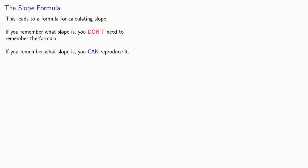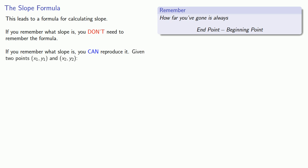The one thing to remember is that how far you've gone is always end minus beginning. Let's say I run between the points (x1, y1) and (x2, y2). If I want to find the rise, I start at a height of y1 and I end at a height of y2, so the rise, end minus beginning, is going to be y2 minus y1. On the other hand, the run is going to be x2 minus x1. Now I can find the ratio, rise over run, y2 minus y1 over x2 minus x1.